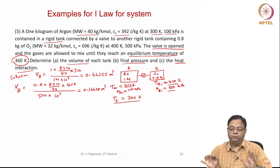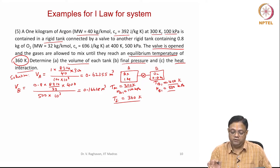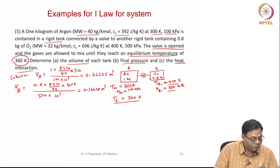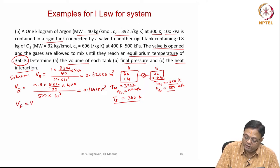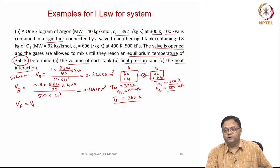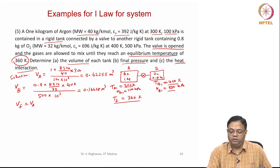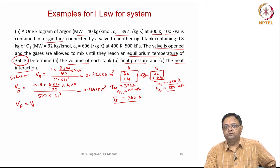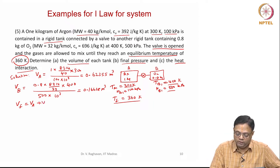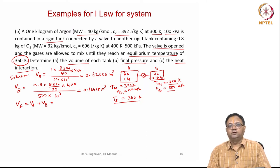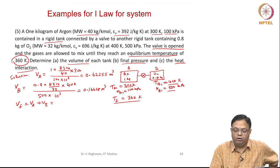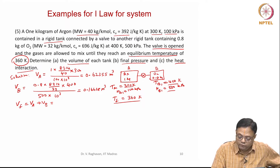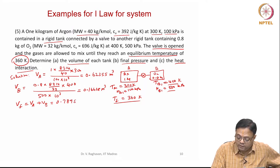These are the individual volumes in compartments A and B. The final volume: since once they mix, argon goes to the other side and oxygen comes to this side. Both components are present uniformly in both tanks, and the final volume is simply VA plus VB, equal to 0.78983 cubic meters.